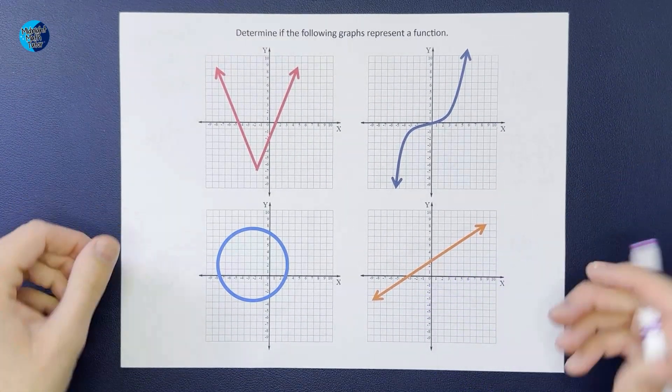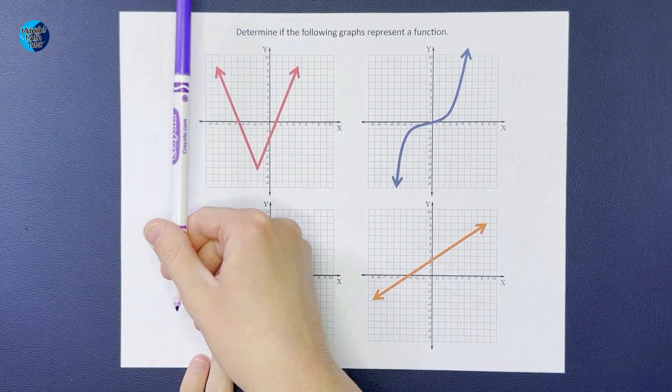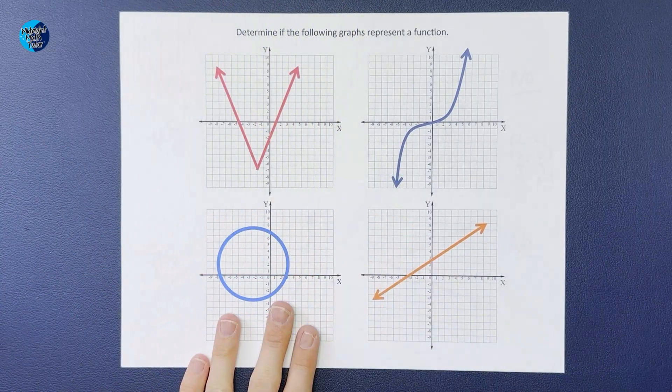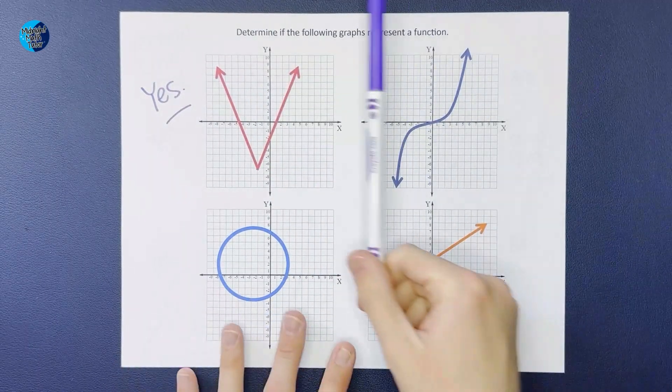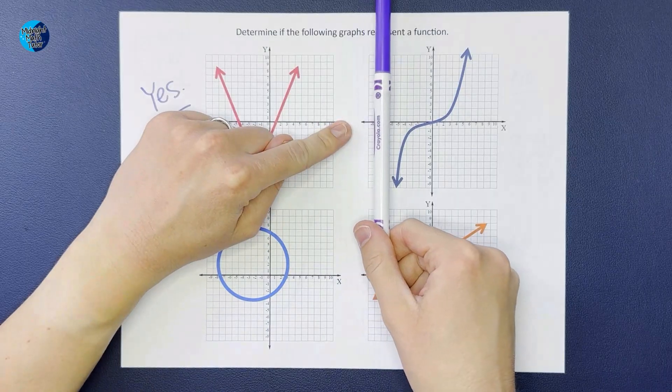All right, I've got a couple more. Still using our vertical line test, you'll get pretty fast at these and sometimes you'll even just be able to look at it and tell. So this one you can see - oh, I never cross two points at once, so yes this one is a function. This one, same thing.